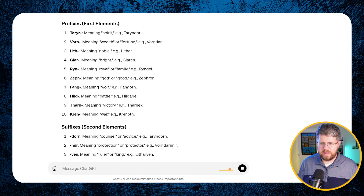And now it's using the language elements we created to generate brand-new names. We have Fingariel — that sounds pretty cool — and Tarn Dornwin. Some of these are pretty long, so you could continue and say: 'Can you make shorter versions of those names, like what people might use as a nickname?' And then we have Tarn, Vorda, Lith, Glaren, Rin, Zeph, Fang, Hilda, Thara, Kren. This could work great in your book if characters have long formal names but go by a shorter nickname.